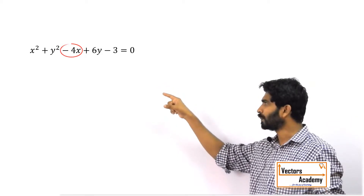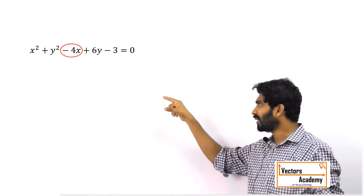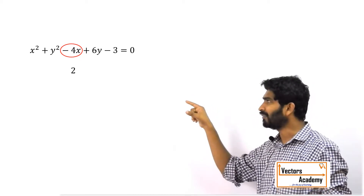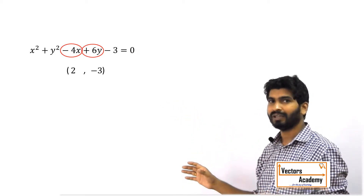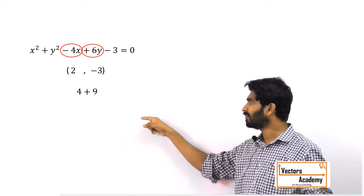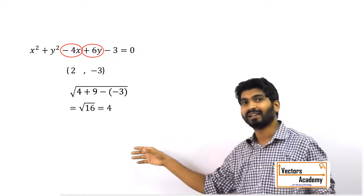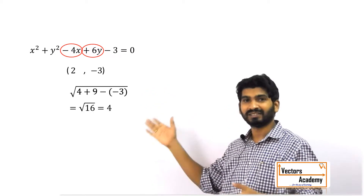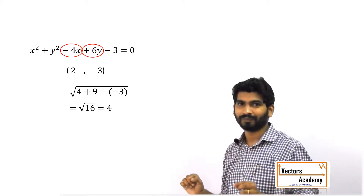The coefficient of x is -4, so just multiply it by half and change its sign — that gives 2. The coefficient of y is 6, so multiply by half and change its sign — that gives -3. So (2, -3) is the center of the circle. The radius is found by √(2² + 3² - (-3)) = √16 = 4. We do not need to write all the steps; this should be done in minimum possible time.